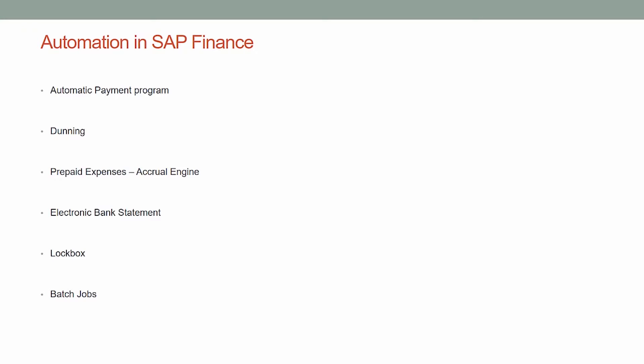Once those changes are made, the system makes a further run whereby it creates a posting document in which it debits the vendor's account and credits the paying bank or cash account which has been configured.